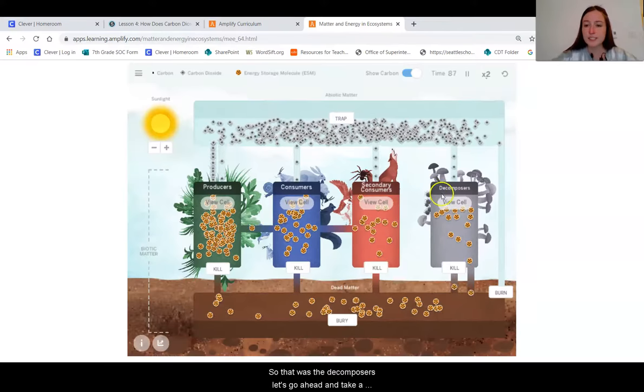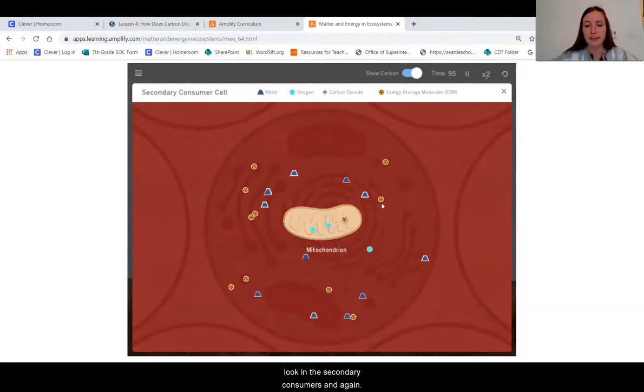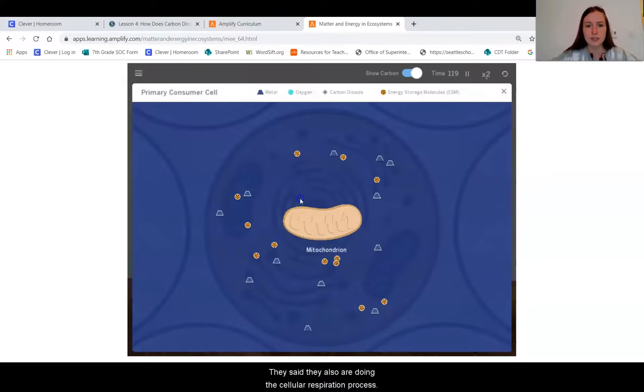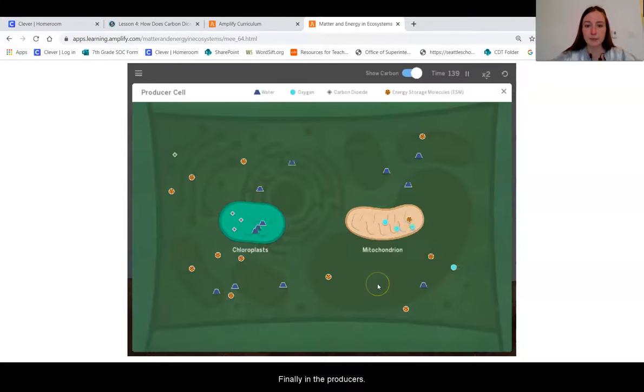So that was the decomposers. Let's go ahead and take a look at the secondary consumers. And again, I'm seeing a similar thing. I'm seeing this thing called the mitochondrion in here. Okay, so they also are doing this cellular respiration process. Again, here in my primary consumers. Finally, in the producers.